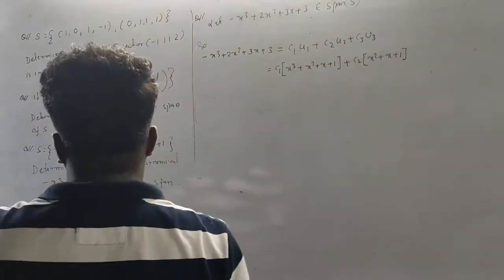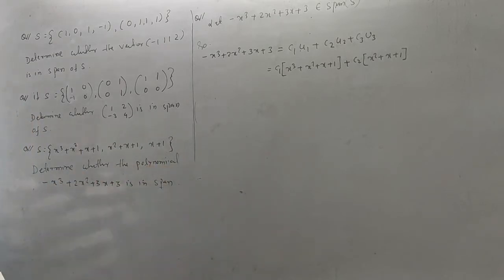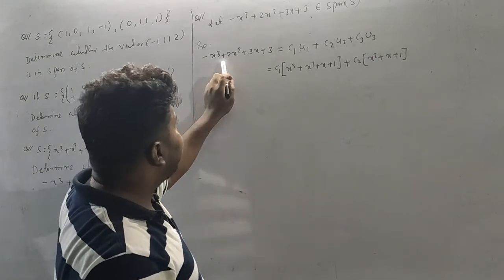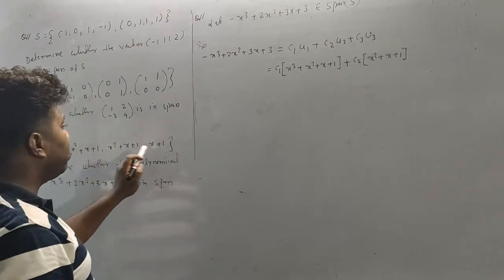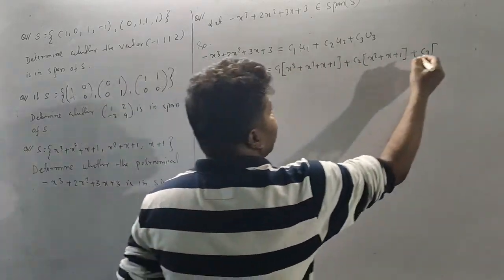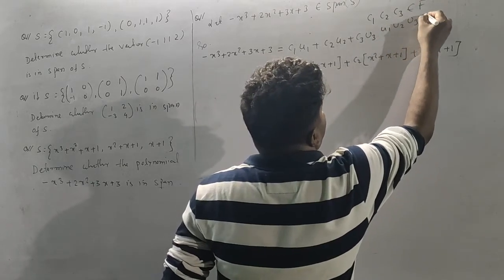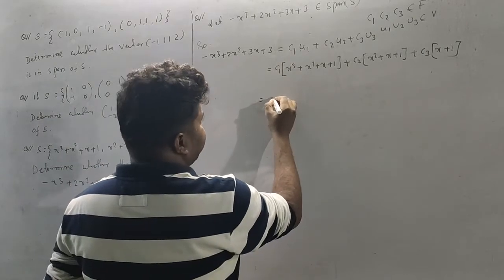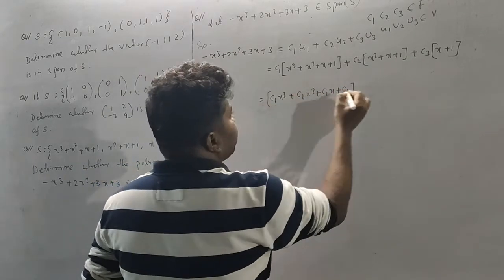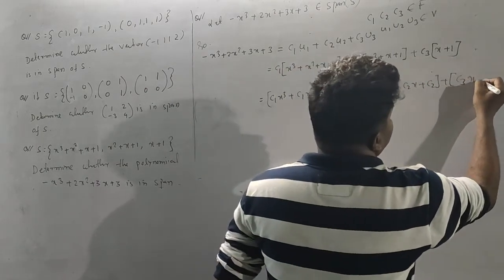The last question: determine whether the polynomial -x³ + 2x² + 3x + 3 belongs to Span S, where S = {x³, x² + x, x + 1}. We write the linear combination as C1·U1 + C2·U2 + C3·U3, where C1, C2, C3 belong to F and U1, U2, U3 belong to V. Expanding: C1·x³ + C2·(x² + x) + C3·(x + 1).